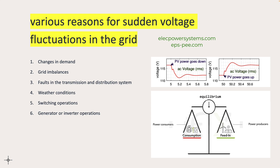Grid imbalances are another cause. Imbalances between power generation and consumption can cause voltage fluctuations. If there is an insufficient power supply to meet the demand, the voltage can drop. On the other hand, if there is an excess supply, the voltage may increase.